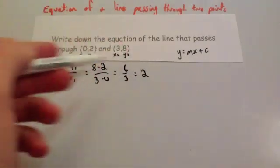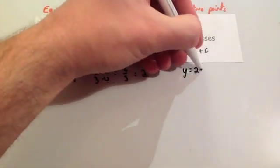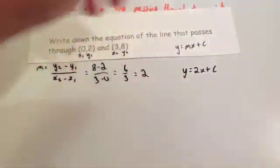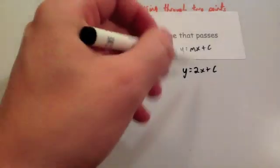So the gradient of this line, or the line that passes through these two points, is 2. So we've now got the form y equals 2x plus c. So we've replaced the m, the gradient, with 2.